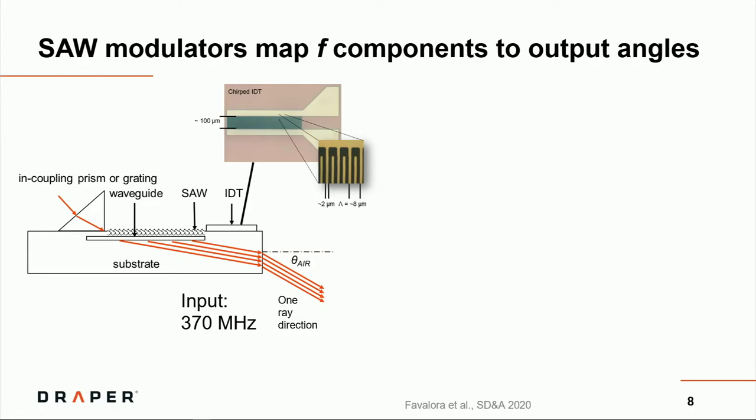SAW modulators, surface acoustic wave modulators, do the job of mapping the frequency components of an applied electronic waveform to output angles of light. Here you could see this one millimeter thick substrate of lithium niobate, onto which is deposited some metallized electrodes, the IDTs. When you apply an input, such as a sine wave at 370 megahertz, a Rayleigh wave appears on the surface of the device and scoots along it. Meanwhile, if you get light into an optical waveguide just below the surface, the two interact, and then it diffracts.